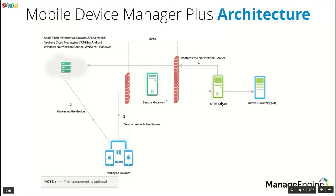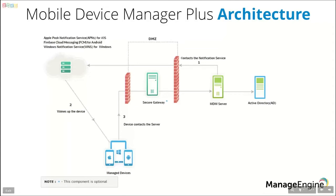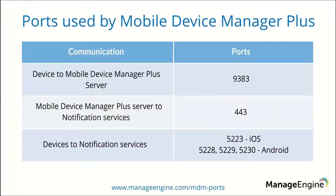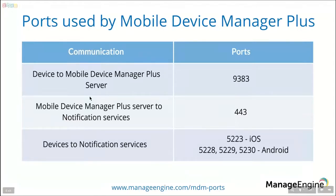But if you are concerned about exposing your server to the public network, you can optionally configure a secure gateway, which will route communications from the devices to the server. You need not worry about these settings if you are a cloud customer. MDM also lets you integrate with directory services such as Okta and G Suite for easier user assignment and authentication. In order to facilitate communications between the server, devices, and notification services, certain ports must be kept open. For example, for the device to contact the MDM server, port 9383 must be kept open. To know the complete list of ports, you can visit the link given under the table.